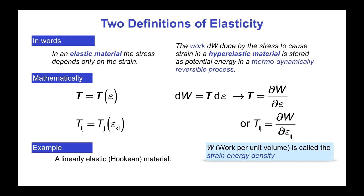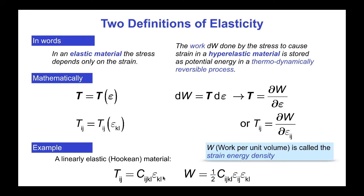For example, for a Hookean elastic material, tij equals cij kl epsilon kl for the most general case. Equivalently, the strain energy w is one-half cij kl epsilon ij epsilon kl — a quadratic function that, when differentiated, gives us tij equals cij kl epsilon kl. So these two formulations are equivalent, but hyper-elasticity is a little more restrictive, which is very valuable when we study non-linear elasticity.